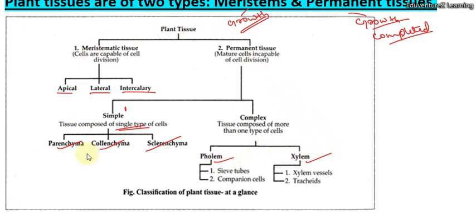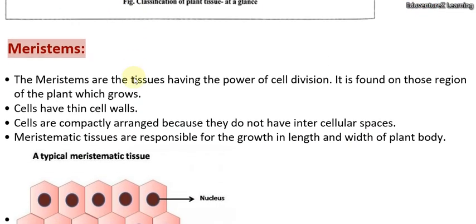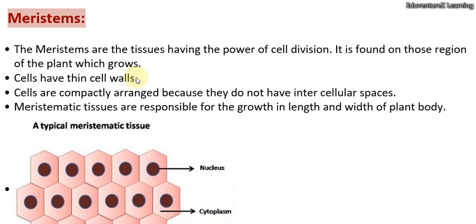In this video, we are going to discuss about meristematic tissue only — meristematic tissue and its parts: apical, lateral, and intercalary. The meristems are the tissues having the power of cell division. Meristems are those tissues that have the power of cell division.